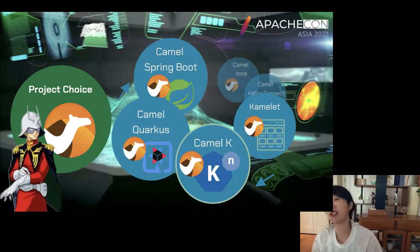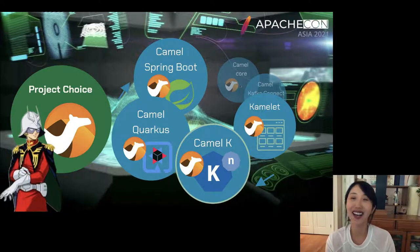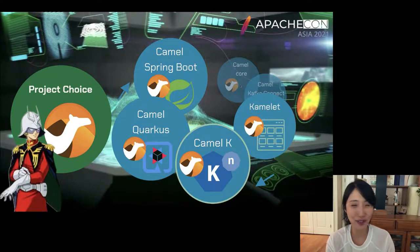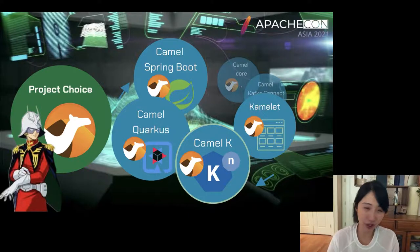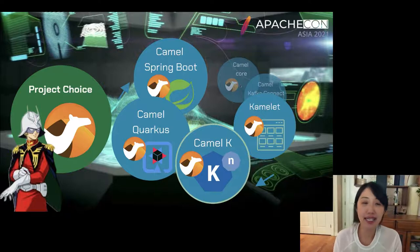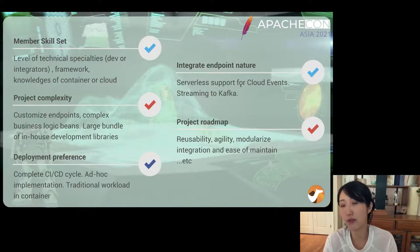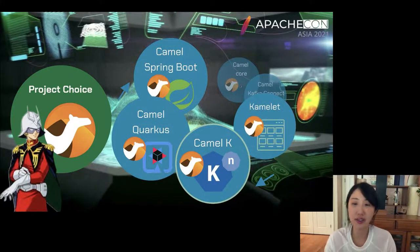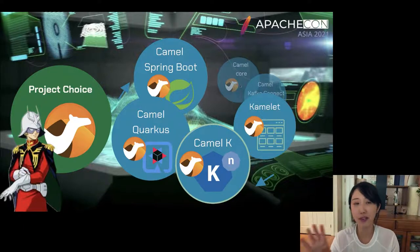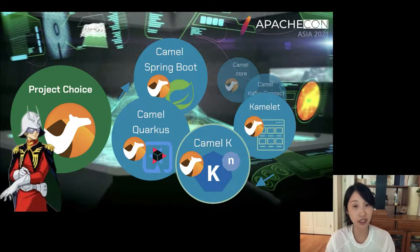Let's dive into project choice. There are several different choices in the Camel community, and if you're a first-time user, you'll be overwhelmed. A lot of choices is good for advanced users but maybe not so friendly for those getting started. I picked four that are friendlier to the cloud native world: Camel Spring Boot, Camel Quarkus, Camel K, and Camel YAML DSL (Kamelet).